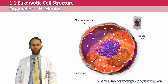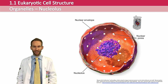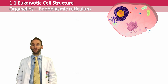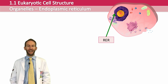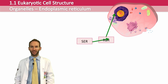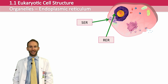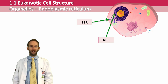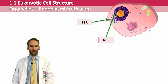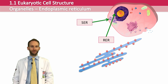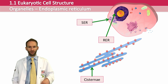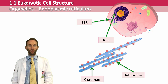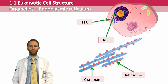The next organelle is called the endoplasmic reticulum. There are two types: the rough endoplasmic reticulum, or RER, and the smooth endoplasmic reticulum, or SER. Endoplasmic reticulum is made up of flattened sacs of membrane called cisternae. The rough ER also has ribosomes dotted on the outside, which are used for protein synthesis.